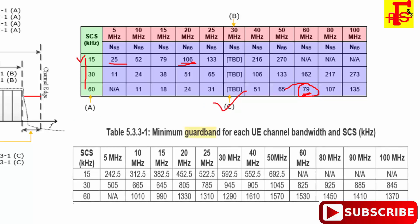The guard band is also calculated as per 3GPP specifications. Different subcarrier spacings — such as 15 kHz, 30 kHz, and 60 kHz — have different guard band sizes for different bandwidths. For example, if subcarrier spacing is 60 kHz and bandwidth is 60 MHz, then the guard band size will be 1,530 kHz on each side.